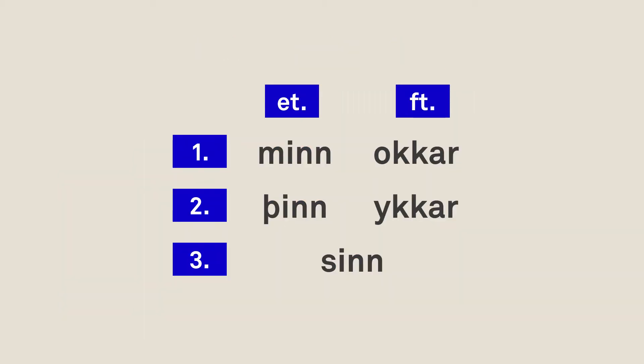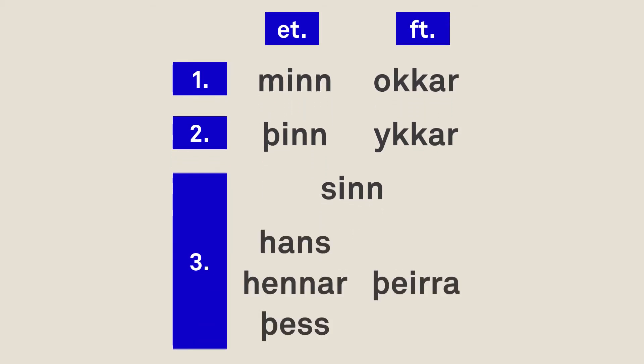So this is our full set so far. Now the third person seems a bit strange with just one form, considering it can mean his, her, its, or their. We actually have a parallel set of forms: 'hans' meaning his, 'hennar' meaning her, 'þess' meaning its, and 'þeirra' meaning their. So what's the difference between those four forms and 'sín'?